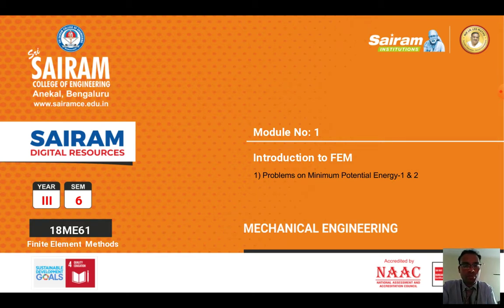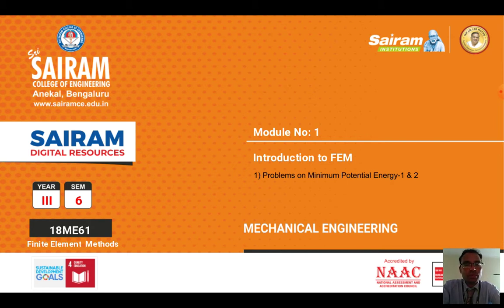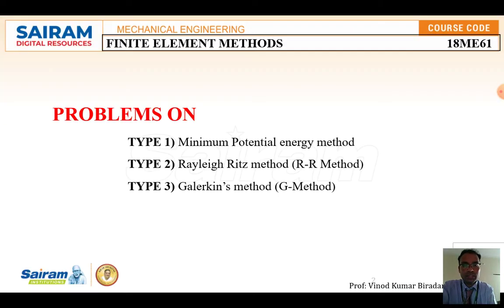Minimum potential energy is the summation of strain energy plus work potential. Strain energy is the energy stored in the internal system due to internal forces, and work potential is due to the external forces acting on the given mechanism. The combination of these two is called the principle of minimum potential energy, denoted by pi. In module one we have three types of numerical problems.